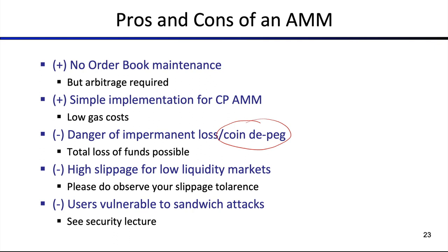The so-called coin depeg is relevant for stablecoins: if coins trade one-to-one and one depegs, arbitrageurs will extract the healthy coin, leaving liquidity providers with a worthless coin. Importantly, this only affects liquidity providers like Alice — not liquidity takers like Bob who is just trading. Another disadvantage is high slippage for low liquidity markets, which are always challenging. Always observe your slippage tolerance and set your percentage to whatever you're comfortable with — 0.1% or similar — and calculate your expected loss.